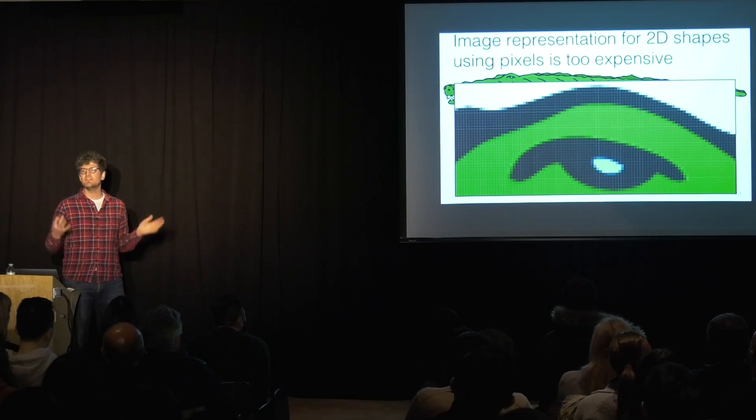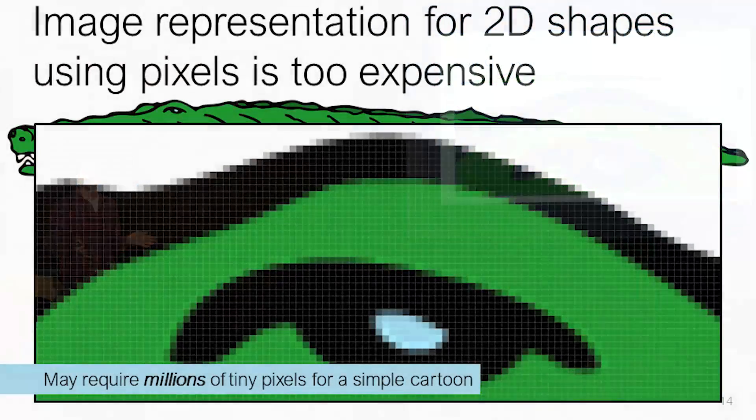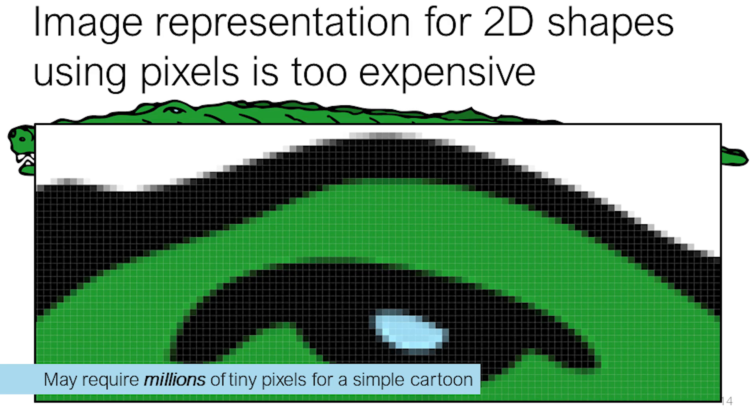But here we're really doing something very, very expensive. So we're storing millions and millions of pixels just for this cartoon alligator. How is this possibly going to scale up to something like the 3D CN tower or all of the anatomy in our body? And we're kind of mixing two different pieces of information. There's the shape of the alligator and there's also the color.